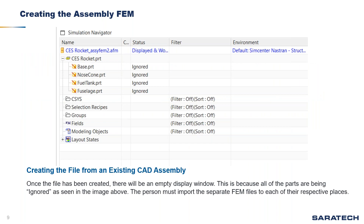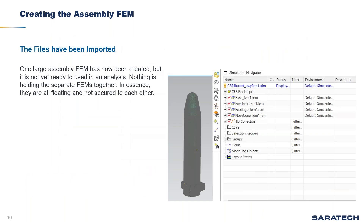When it comes to creating the assembly FEM, the first step is making sure that all parts or sub-assemblies have their individual FEMs completed and ready. Once we create the assembly FEM file, we'll notice an empty display window and all of our parts will be listed as ignored. We then import those individual FEM files into their respective ignored part files, and our assembly FEM will appear all set up on screen.